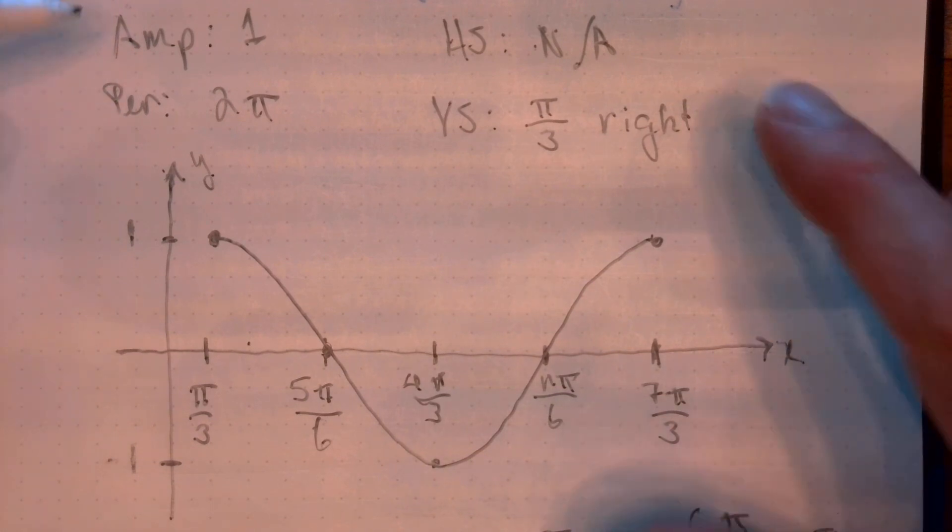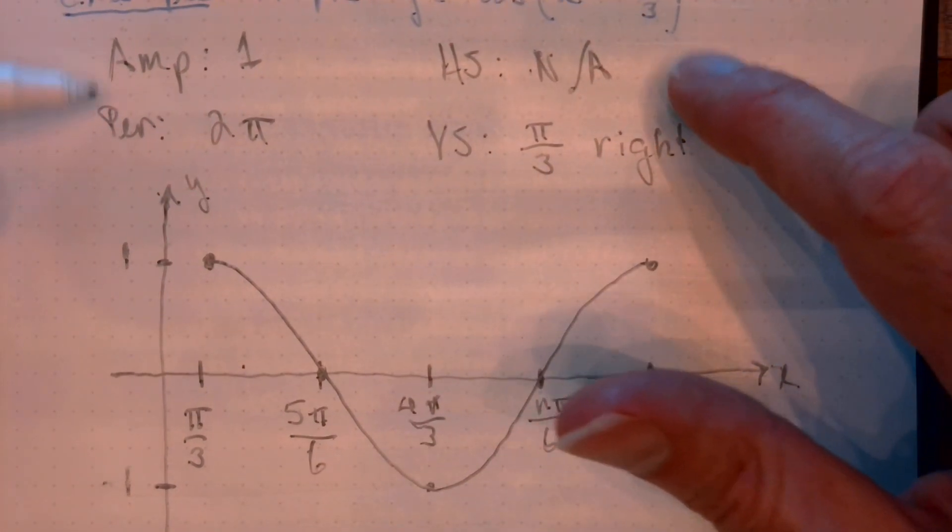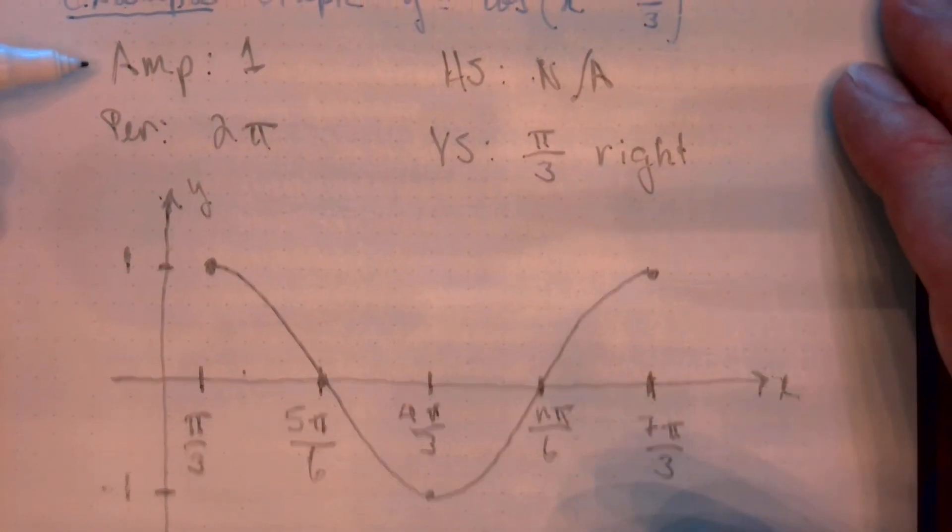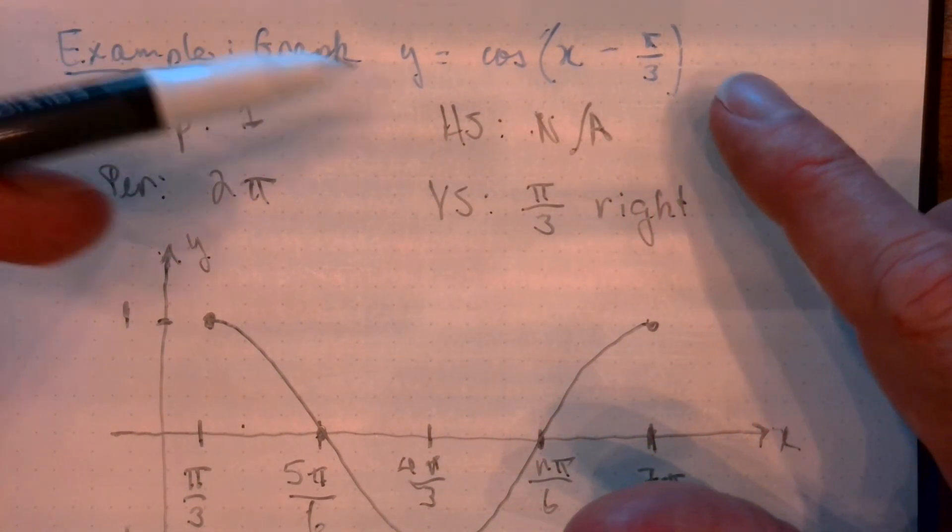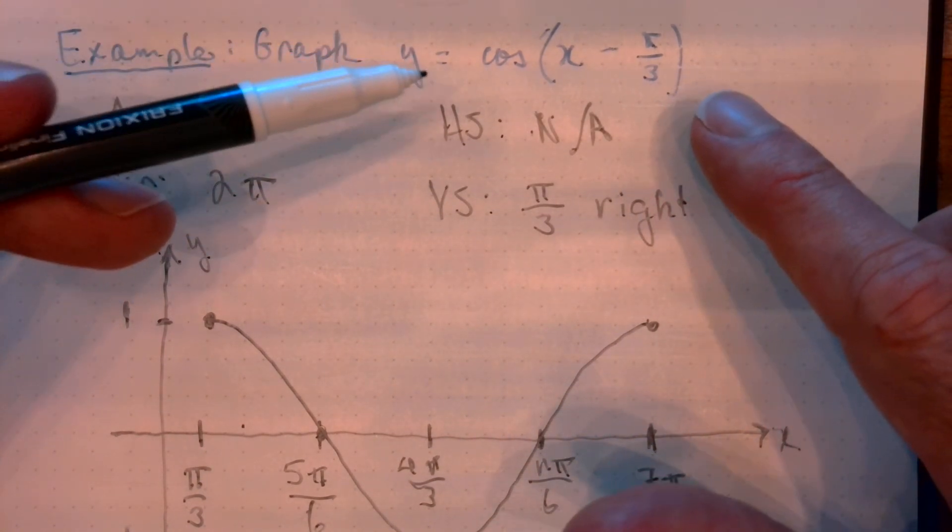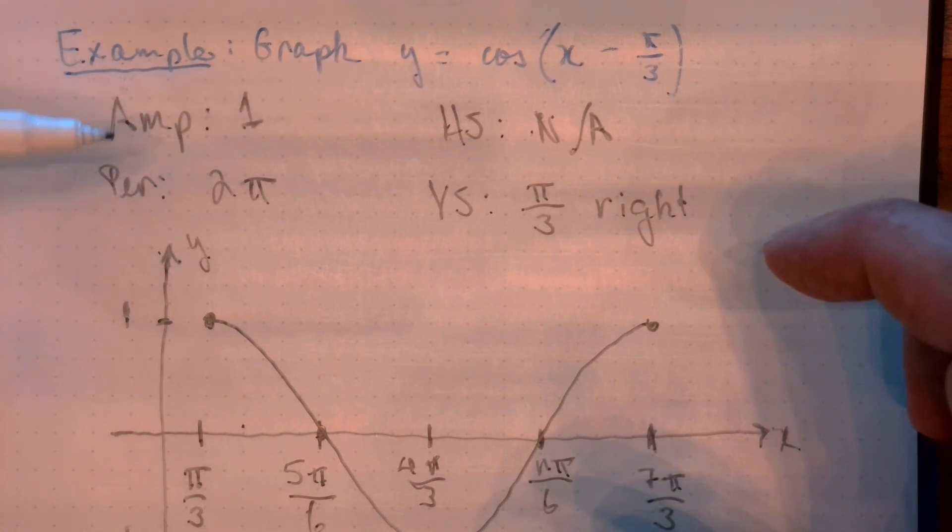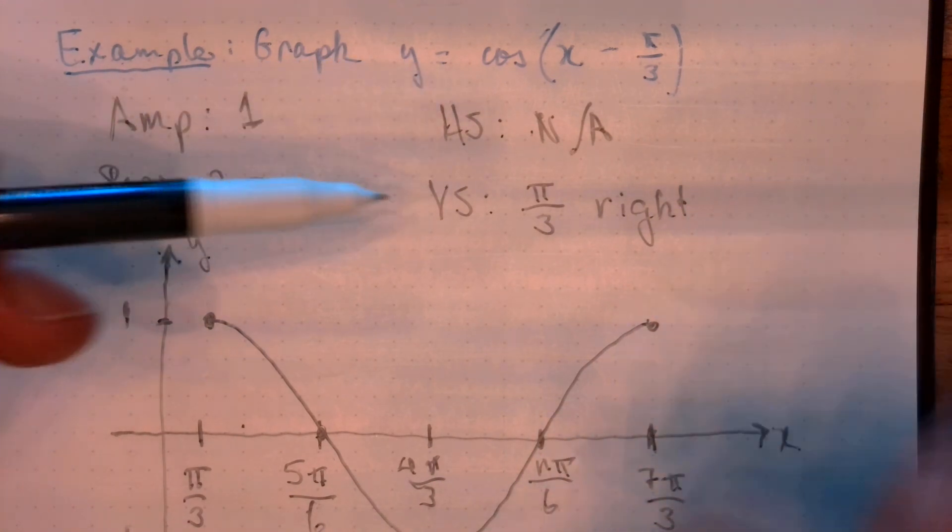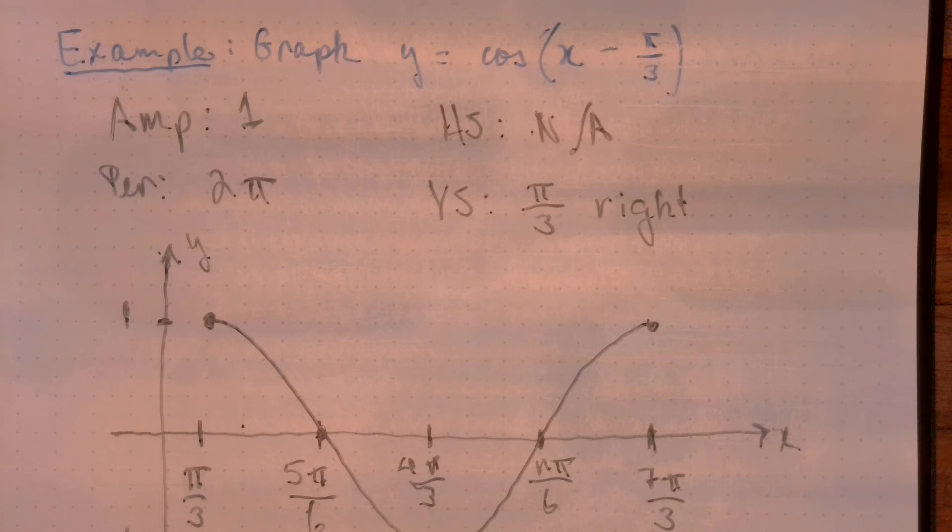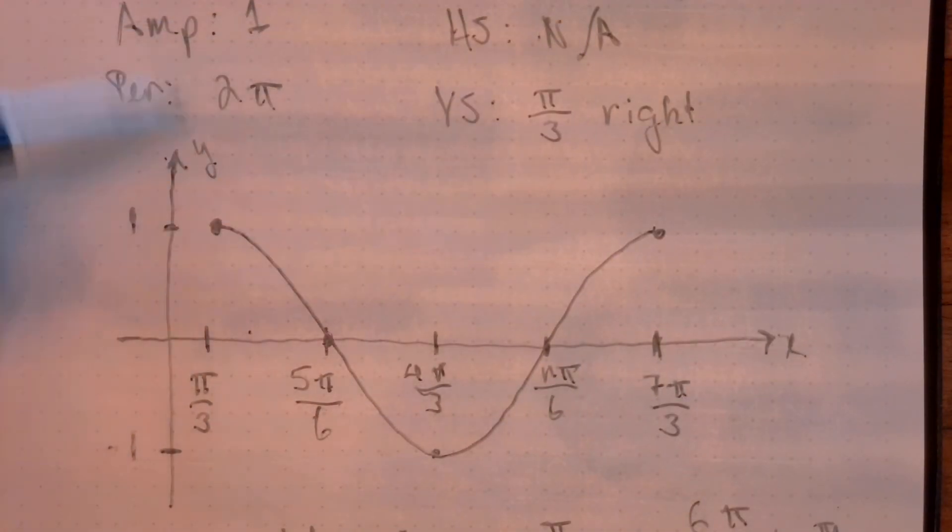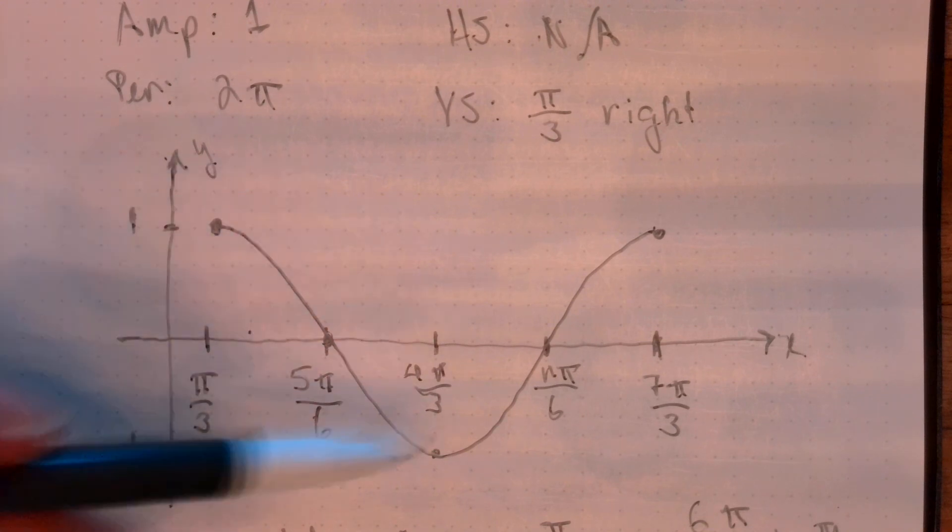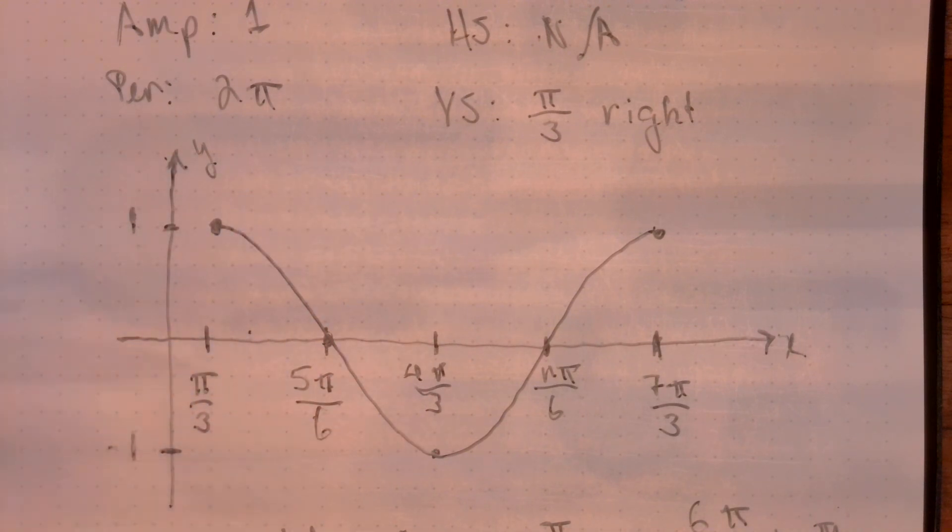So, when you're graphing these functions, I would recommend you make a little list of the relevant information. And all this material you can read from the functions formula. Get the amplitude, period, horizontal and vertical shift. Now, once you have all that, now you're ready to go and draw your picture. You put this information together into this visual representation, and you have everything you need to draw an accurate graph.